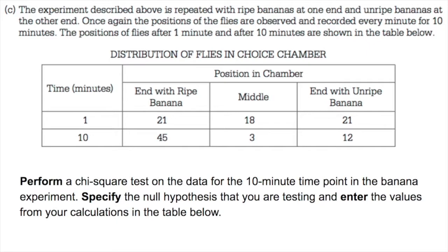Perform a chi-square test on the data for the 10 minute time point in the banana experiment. Specify the null hypothesis you are testing and enter the values from your calculations in the table below.